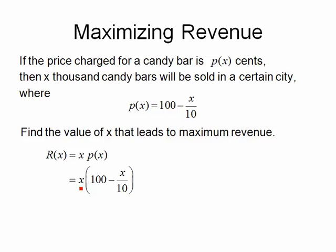So what we end up getting is x times the quantity (100 - x/10). In our next step, we'll distribute the x into both of the terms there, which gives us 100x - x²/10. This is fairly simple to take the derivative of, so we'll use that to find our critical points.